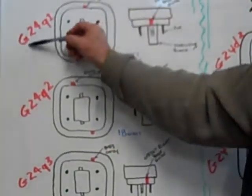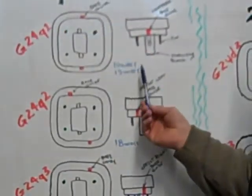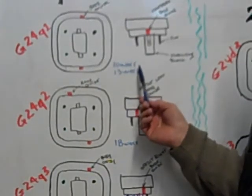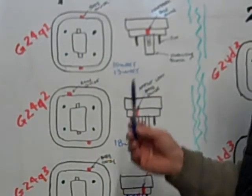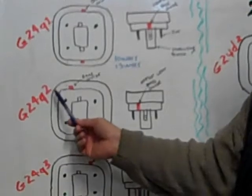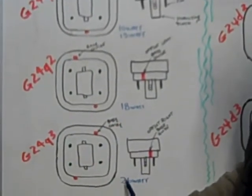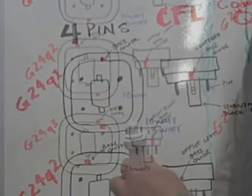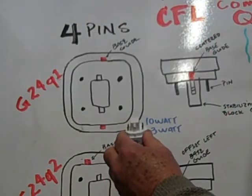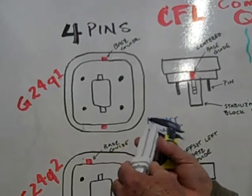Now the G24Q1 is commonly used with a 10 watt and a 13 watt. The Q2 is an 18 watt and the Q3 is a 26 watt. This is an example of a G24Q1.